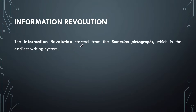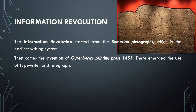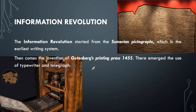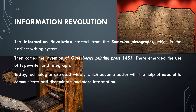The information revolution started with the Sumerian pictographs — you can see here one example of a Sumerian pictograph, which is the earliest form of our writing system. Afterwards comes the invention of the printing press, specifically Gutenberg's printing press in 1455, which gave us our first book, the Bible, specifically called the Gutenberg Bible. Then emerged the use of the typewriter and telegraph.